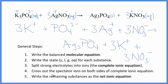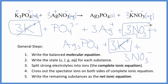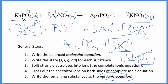Now we can cross out the spectator ions — they're on both sides of the complete ionic equation. I can see three potassium ions in the reactants and in the products — those cancel. And then three nitrates here in the reactants and in the products — those go. What's left is the net ionic equation for K3PO4 plus AgNO3.